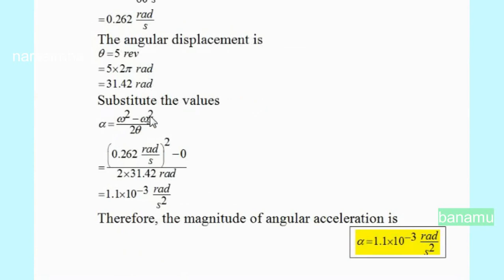Alpha equals (0.262 radians per second) squared minus 0, divided by 2 times 31.42 radians. Alpha equals 1.1 times 10 to the power of minus 3 radians per second squared.